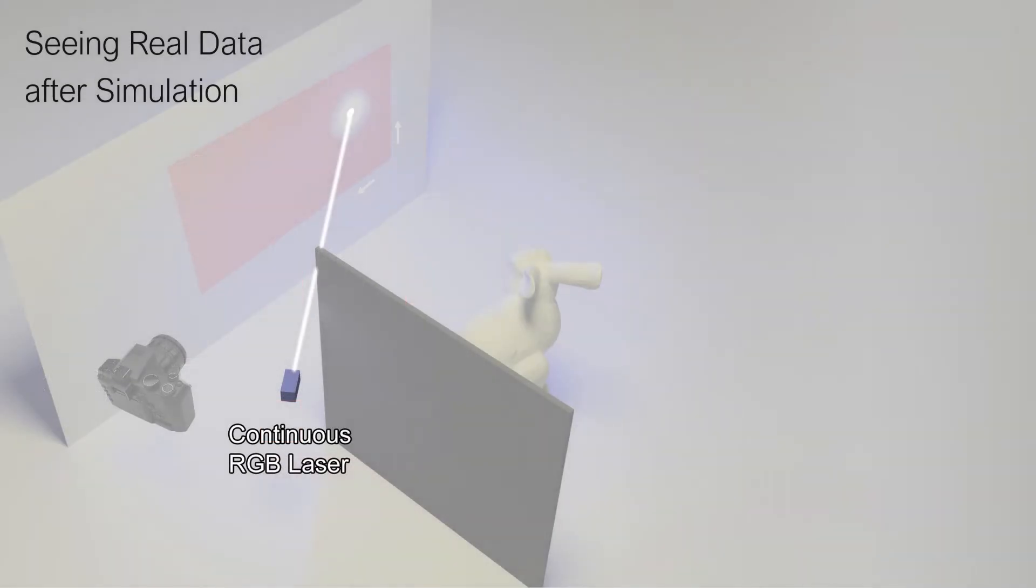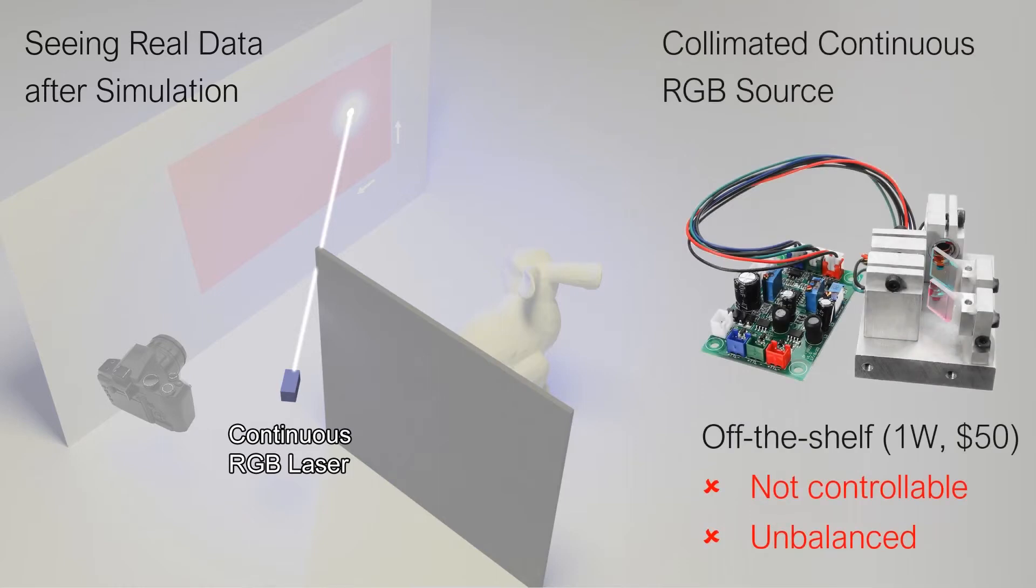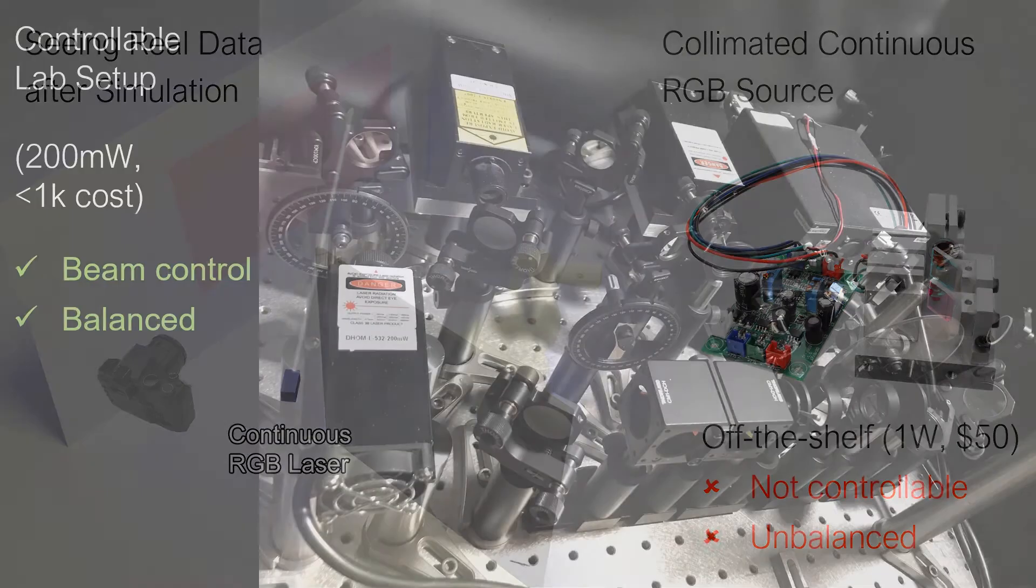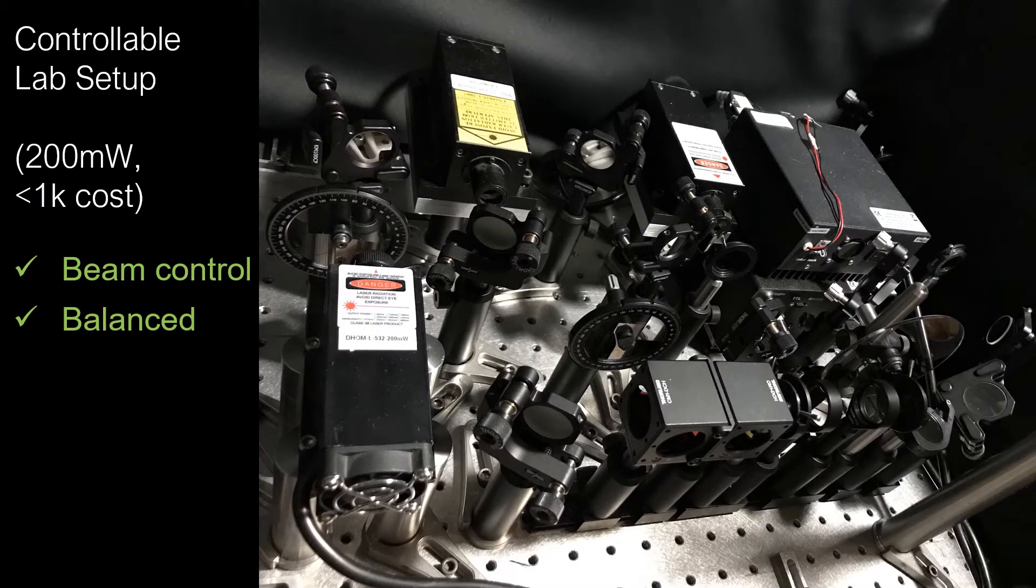After training and simulation, we apply the unmodified model to experimental data. We require a high-power collimated white light source, which does exist commercially, but the ones available are not easily controllable. We built a lab setup that is very controllable. The system still costs less than $1,000.